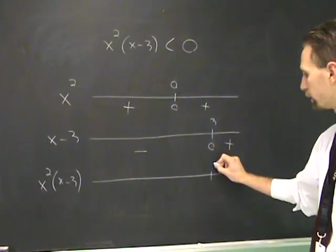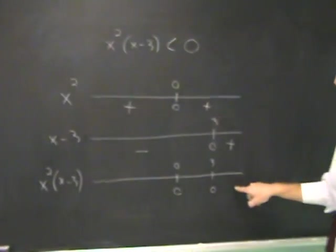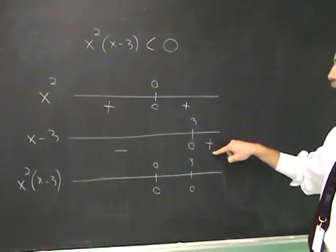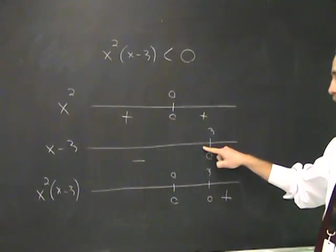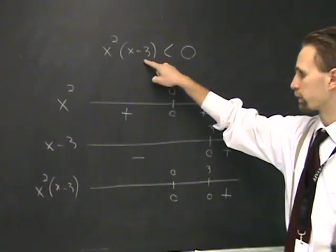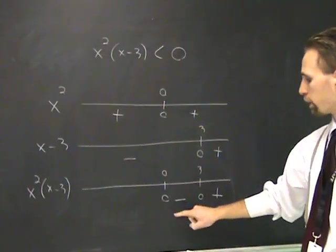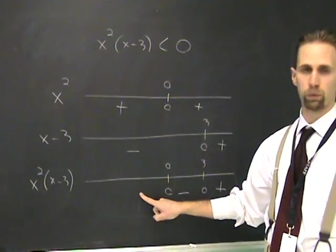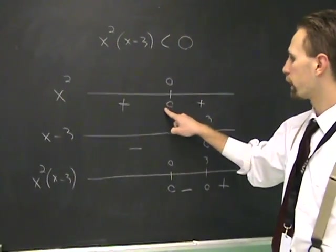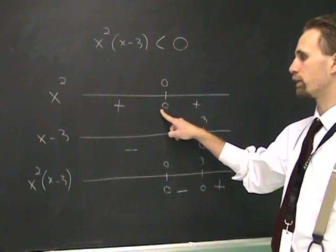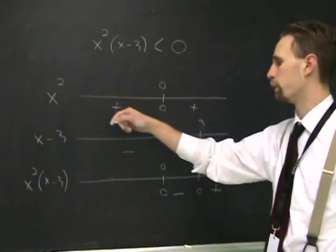And now look at the effect that has on the final product. If x is greater than 3, both factors are positive. So their product is positive. If you cross over 3, this factor changes sign, making the whole thing negative. But when you cross over 0, when you would normally be expecting another sign change, this factor did not get a chance to change sign because it had a square on it. This thing is always going to be positive.